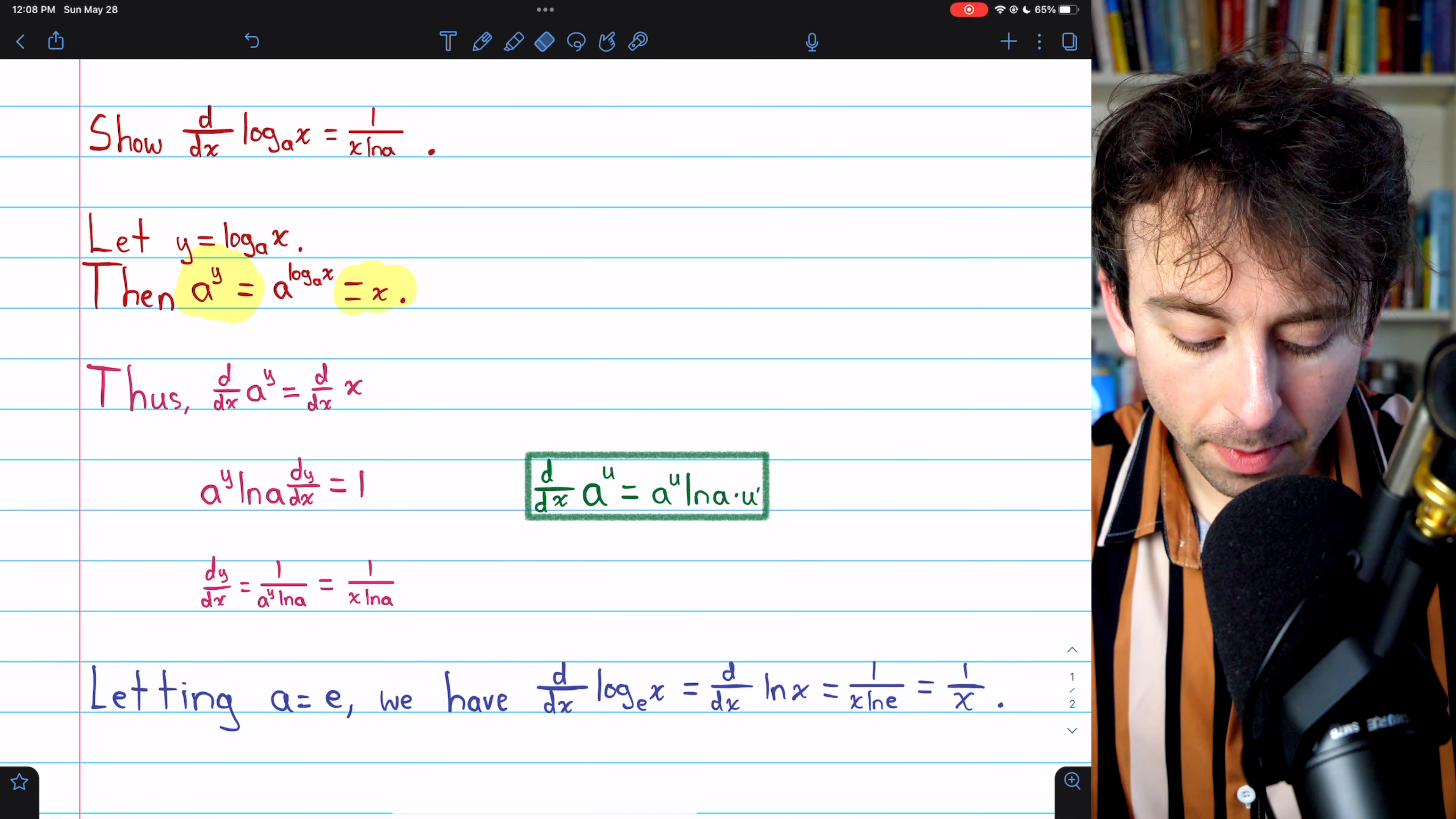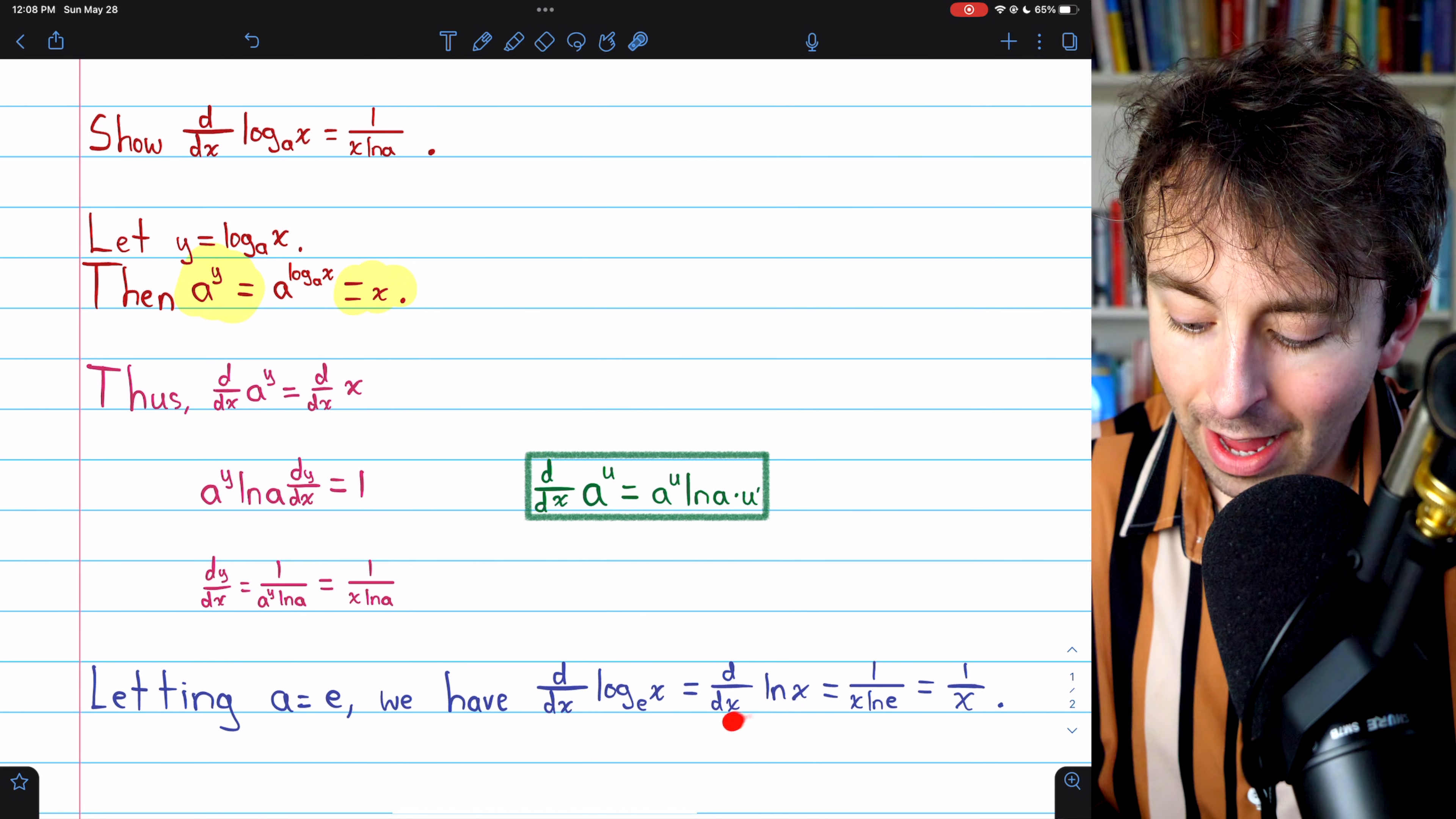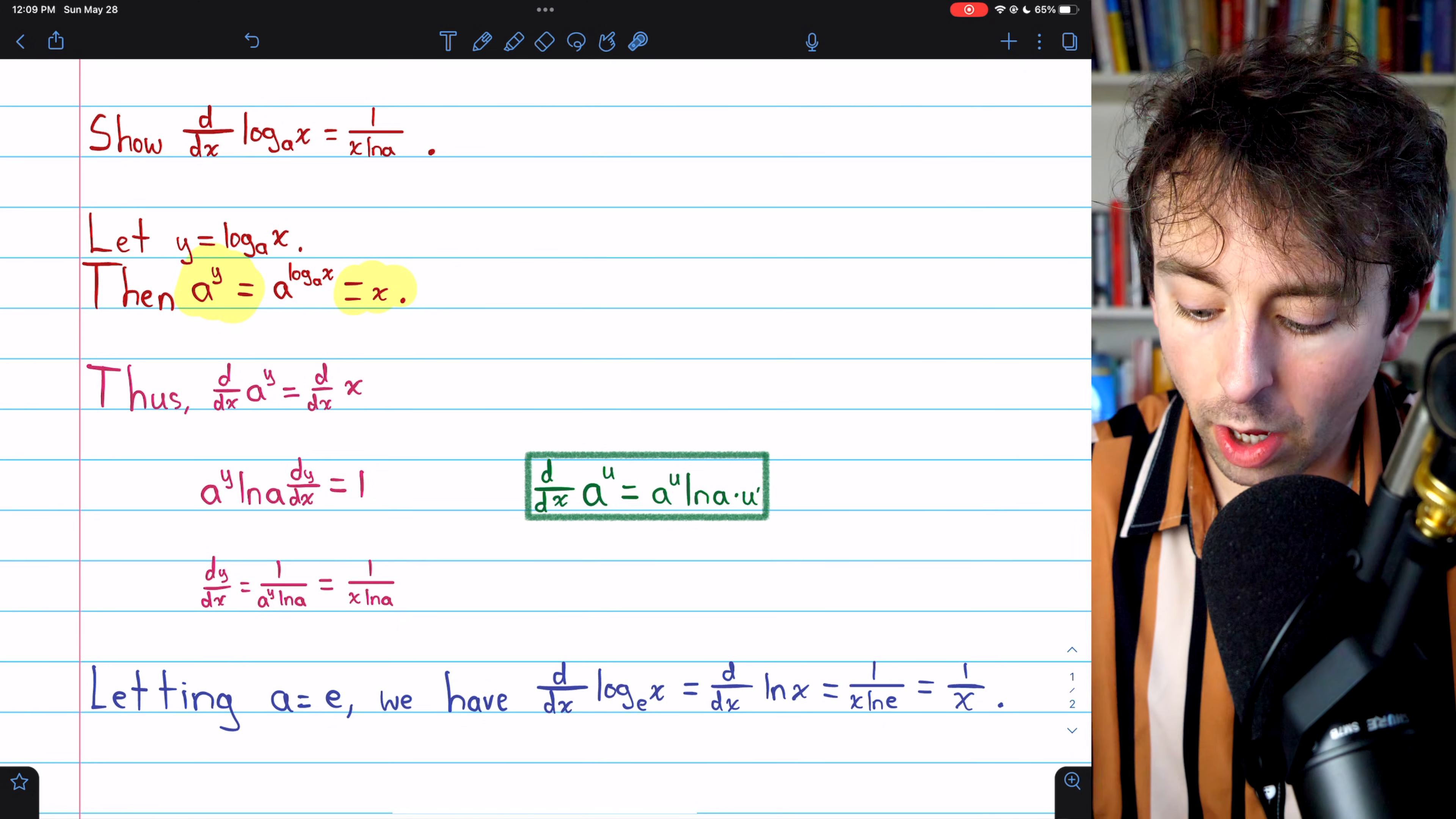For an example, if we let a equal e, then we're considering the derivative of log base e, which is the natural log. And this formula tells us that's equal to 1 over x times the natural log of that base e. The natural log of e, of course, is just 1.